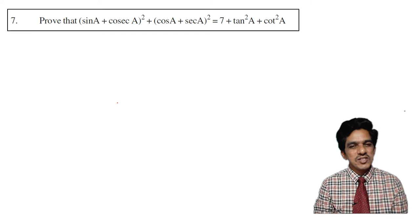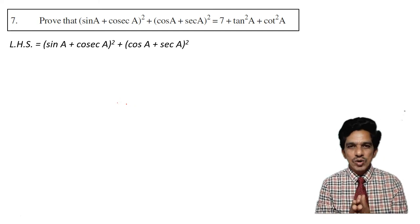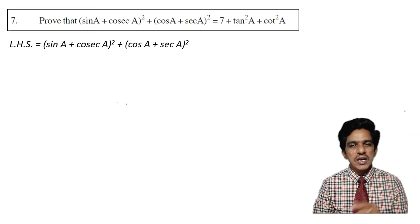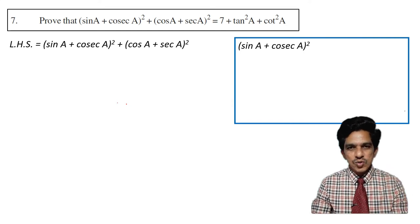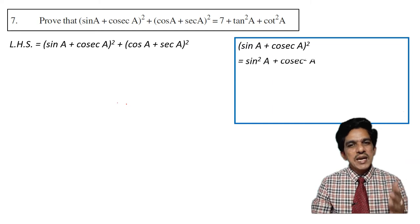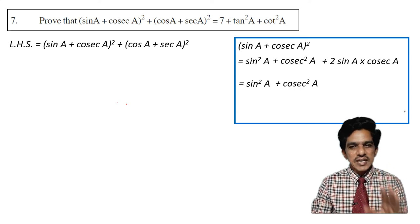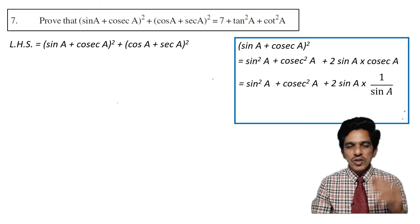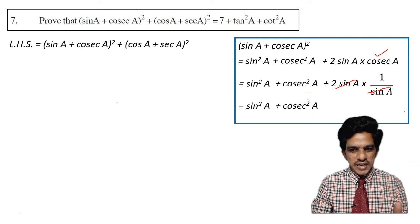On the left side, we have sin a plus cosecant a whole square plus cos a plus secant a whole square. We already know that sin and cosecant are reciprocals of each other. We will first expand sin a plus cosecant a whole square using the formula a plus b whole square equals a square plus b square plus 2ab. This becomes sin square a plus cosecant square a plus 2 sin a into cosecant a. Since cosecant is the reciprocal of sin, the 2 sin a into cosecant a simplifies to 2. So we are left with sin square a plus cosecant square a plus 2.